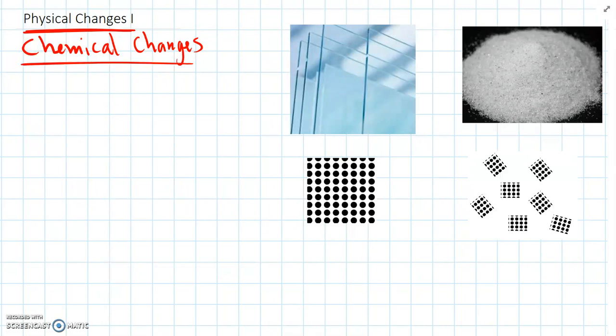So firstly, physical changes. These are things that are really common and simple ways of changing a material. And the key with a physical change is that the material stays the same material at the end of the change.